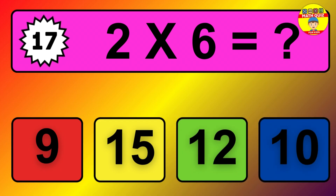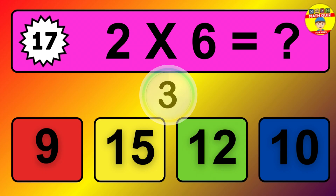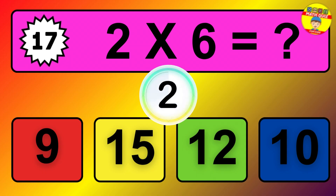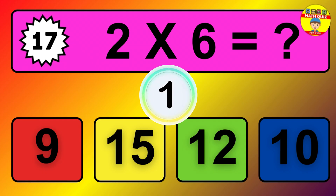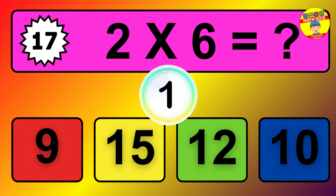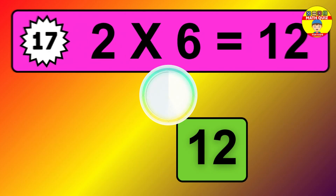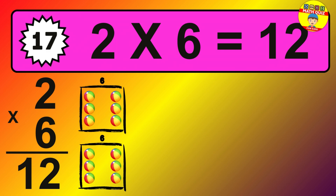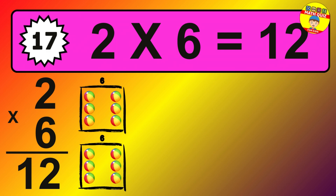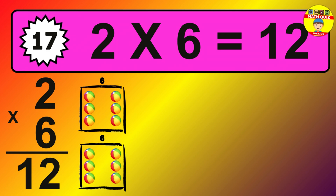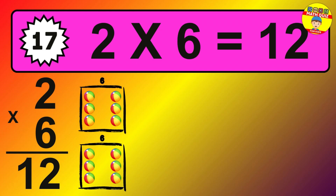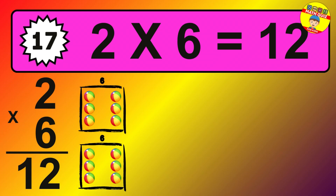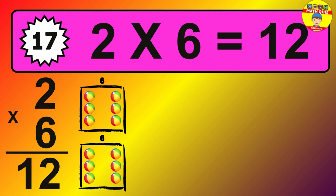Question 17. 2 times 6 equals what? The answer is 2 times 6 is 12. To calculate, we have 2 groups with 6 balls each one. So, how many balls do we have? 12 balls.